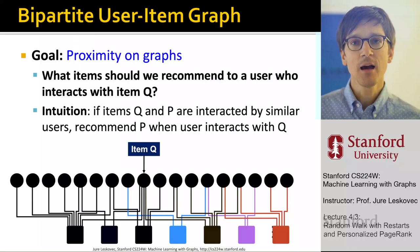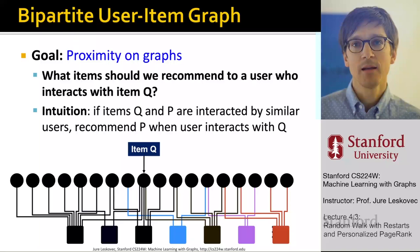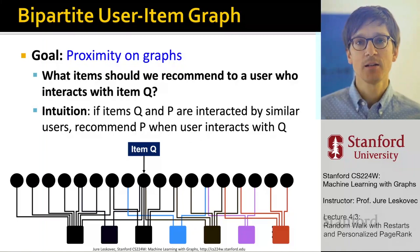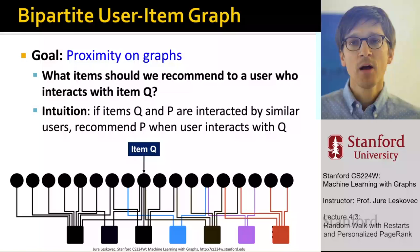The idea would be that if two items P and Q are purchased by a lot of similar users — a lot of other users have bought or enjoyed the same movie — then whenever a user is looking at item Q, we should also recommend item P. So how are we going to quantify this notion of proximity or relatedness of different items in this graph?